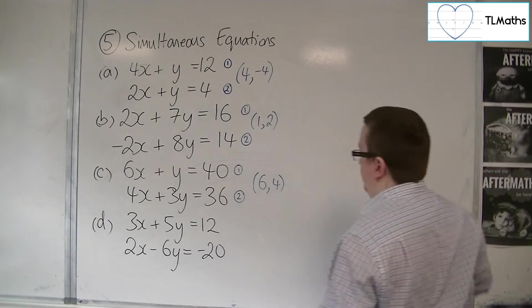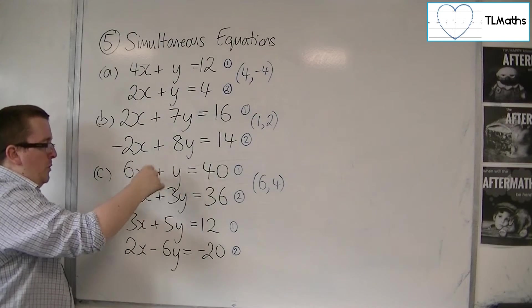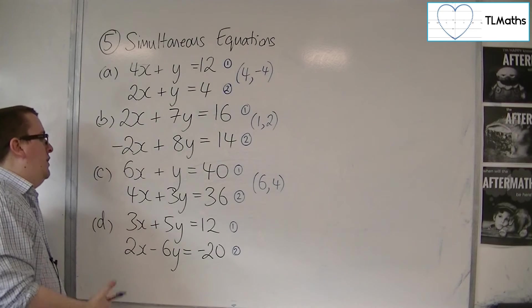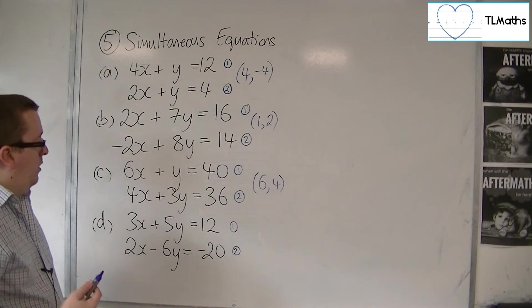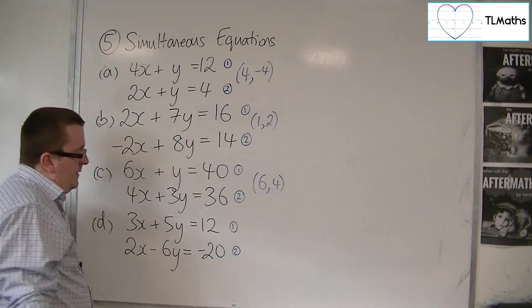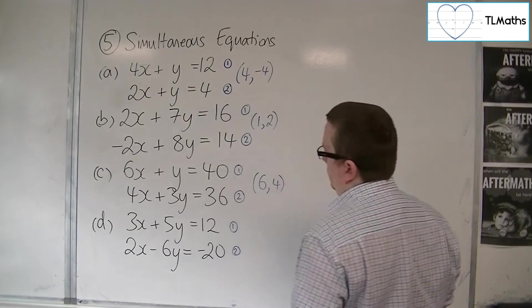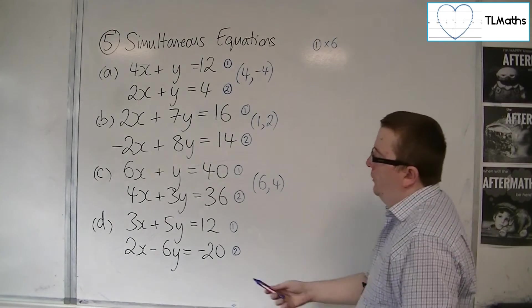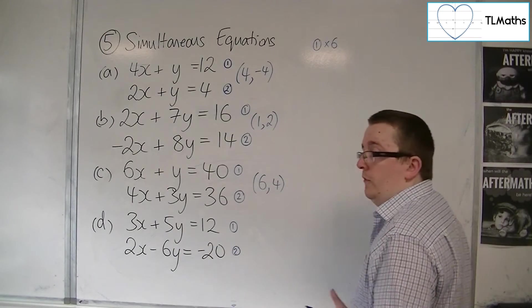Now for D, we're going to do the same process. Now in C, we had a relatively straightforward choice of working with the y's. You could work with the x's if you like, but it required more manipulation. With this, we could work with either the x's or the y's. It doesn't really matter because it will be the same amount of work either way. Now I would probably work with the y's. The reason why, no pun intended, is because I have a plus and a minus. So eventually I'll just be able to add the two equations together. And the y's should cancel. So what I would do is I would multiply equation 1 by 6. I'm multiplying by 6 because that is the number that I have there. And I'm going to multiply this equation by 5 because that's the number I have there. And so they will both have the same coefficient for y.